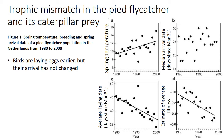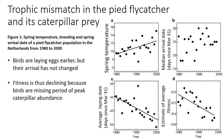Researchers estimated fitness by looking at how many offspring returned to the breeding ground the following year. Average fitness has been declining during this period even though the birds have somewhat adjusted by laying their eggs earlier. This adjustment is not enough — the birds are still missing the period of peak caterpillar abundance, and it is having a clear effect on their population.